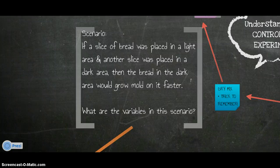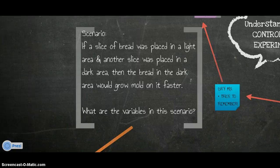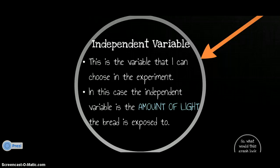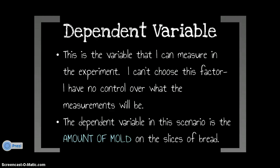Let's look at another scenario to determine what a graph might look like with our independent and dependent variables. If a slice of bread was placed in a light area and another in a dark area, then the bread in the dark area would grow mold faster. The independent variable — the one I can choose — is the amount of light the bread is exposed to. Independent starts with I: I can choose this. The dependent variable, which I measure and have no control over, is the amount of mold on the slices of bread.